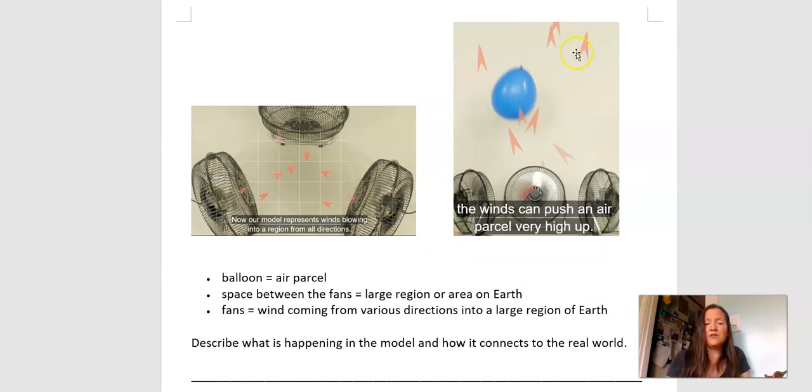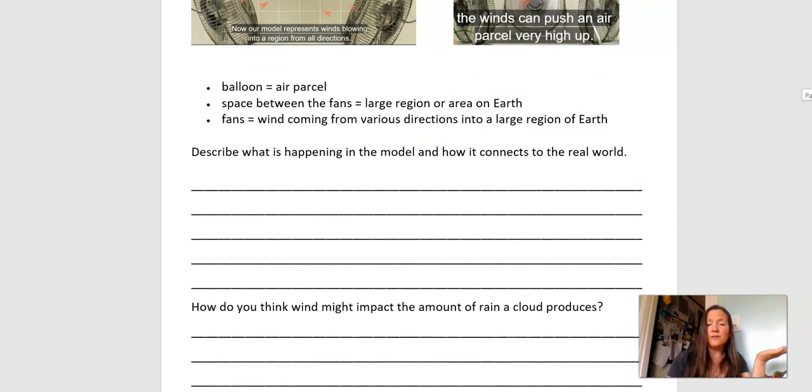What happens if we have a bunch of fans? So here we have a bunch of fans pointing at each other, and this is blowing air from all different directions. So in the real world, sometimes we have air that just blows one way, and sometimes it feels like the air is kind of coming from a bunch of different directions. So these fans are representing air coming from a bunch of different directions. And here we are. We have put our air parcel in the center of it, and what happens when you get this air from all these different directions? You get your air parcel getting pushed up faster. So in our model, it's always good to connect our model to the real world when we make a model. The balloon is the air parcel. The space between the fans is like an area on Earth. And the fans are representing the wind that's coming from the various directions. All right, so your job now is to describe in your own words what happened in the model and how it's connecting to the real world.